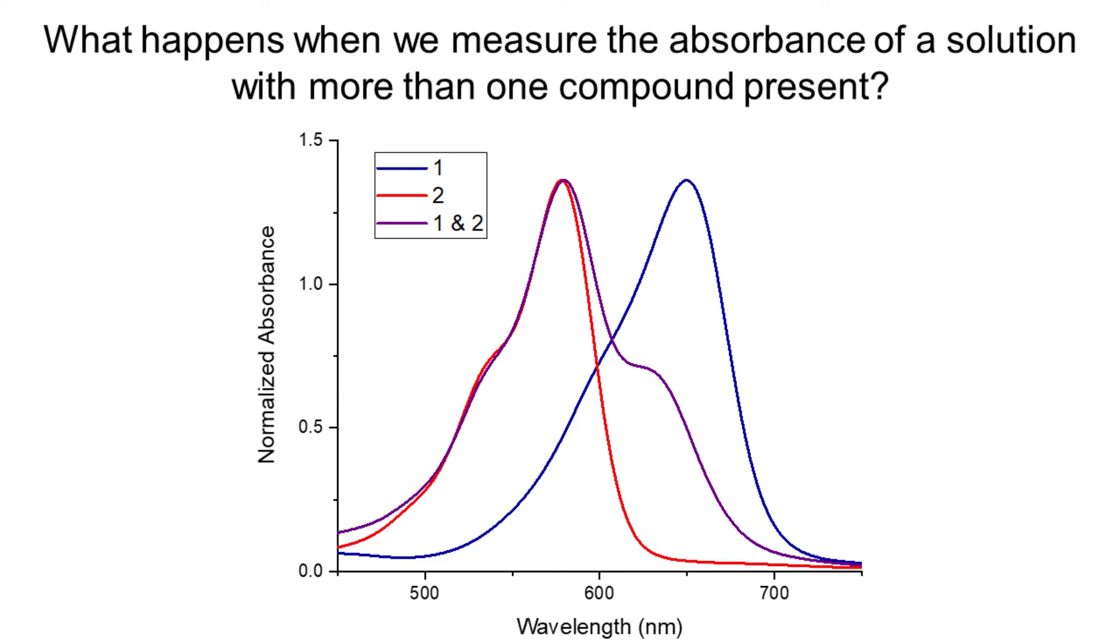One of the most important things to note is that the lambda max value is not the same as the two individual components. In red, our lambda max is about 578, that's compound 2. In blue, our lambda max is about 650 nanometers, that's compound 1. If we look at the mixture of the two, we see a maximum at about 580, which is kind of close to compound 2, but not exactly. We can't identify the maximum for the other species, although it looks to be around 620 nanometers.